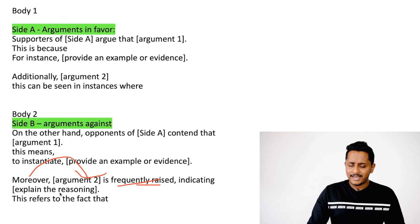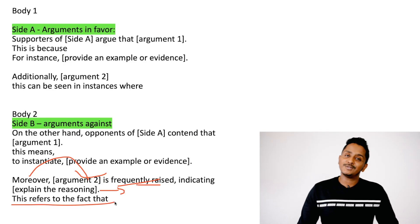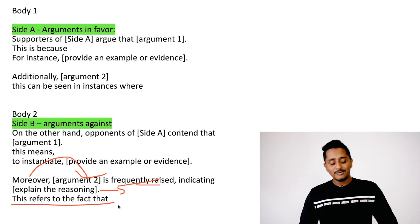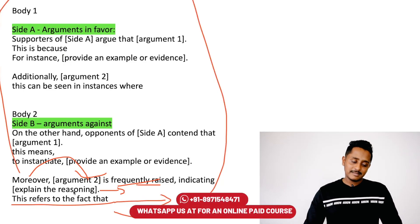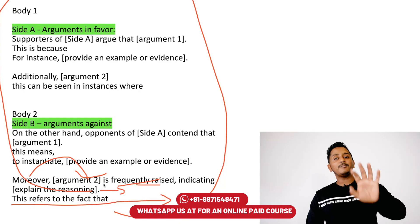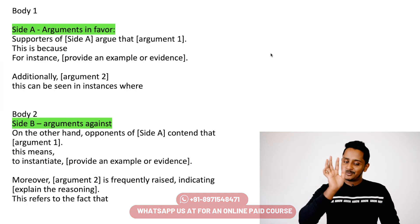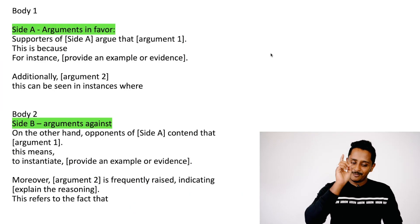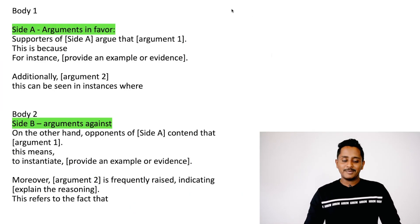For the second idea in body two: '...is frequently raised, indicating...' — write the argument — and then '...this refers to the fact that...' — one more supporting idea. This is where your marks are hidden. Make sure you watch the video till the end, because next we have an example showing how to fill this all in.